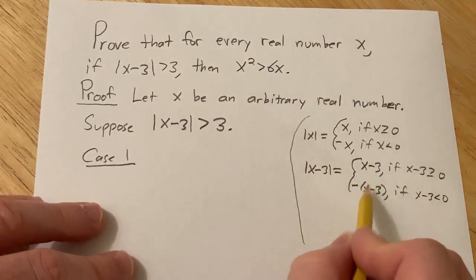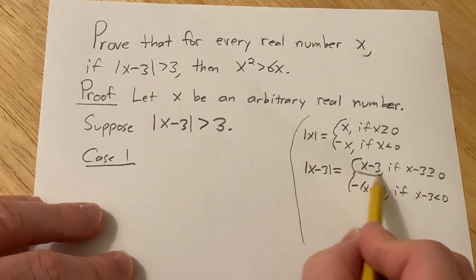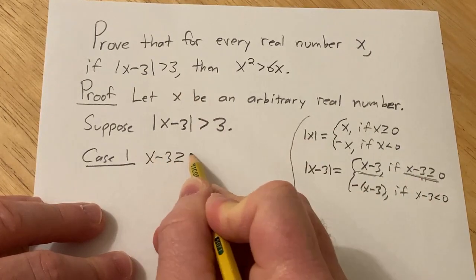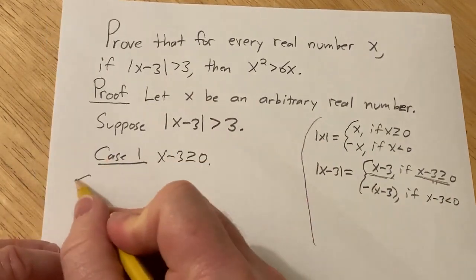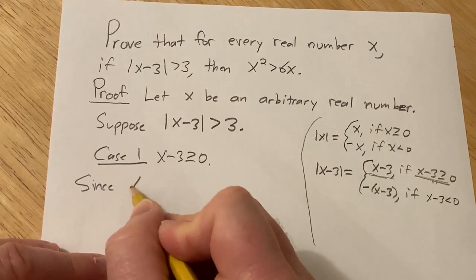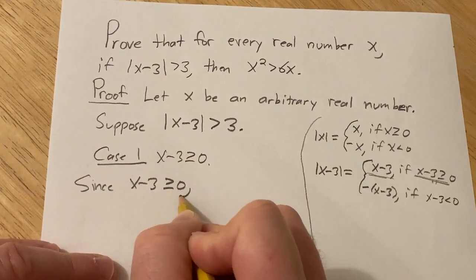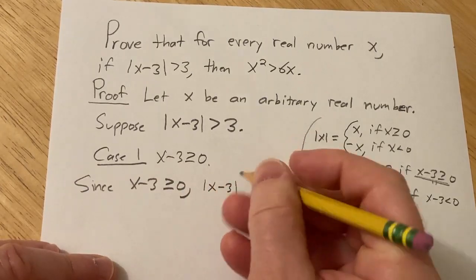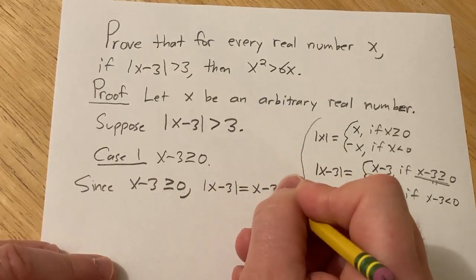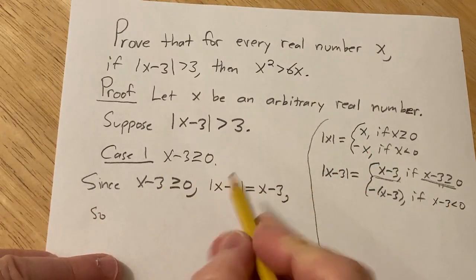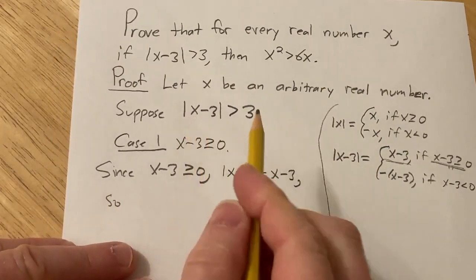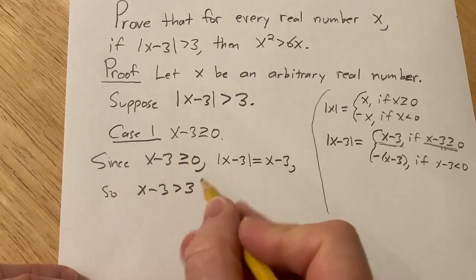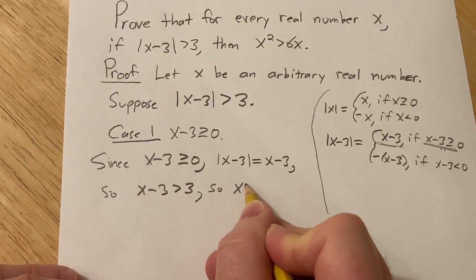So one of these two things is going to happen. So let's look at this case first, x minus 3 greater than or equal to 0. So since x minus 3 is greater than or equal to 0, we have the absolute value of x minus 3 equal to x minus 3. So that means that we basically have x minus 3 greater than 3. So that basically means that x is bigger than 6.